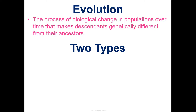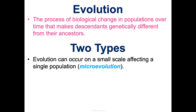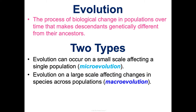We can categorize evolution into two types. There's micro-evolution, which is on a small scale — looking at a single population of frogs in a specific area like a certain pond. And then there's also macro-evolution, which looks at large-scale evolution and how a species has changed across populations living in different places over time.